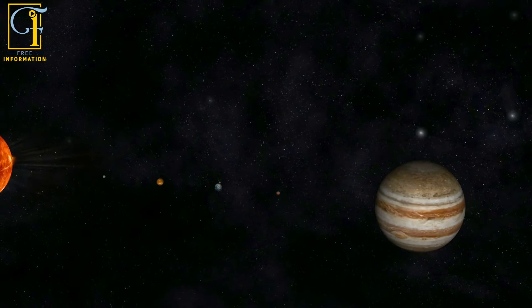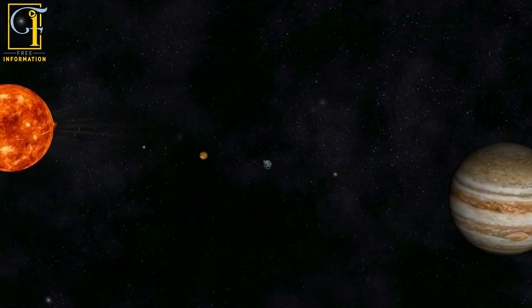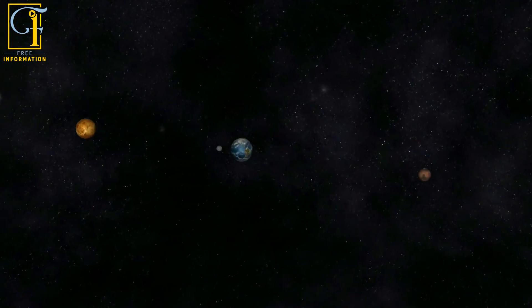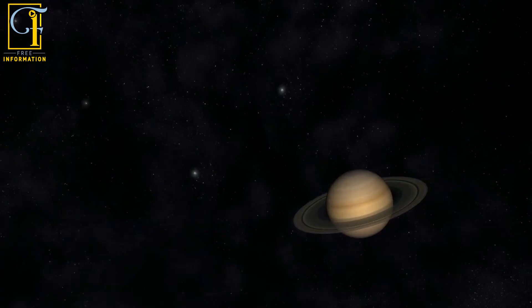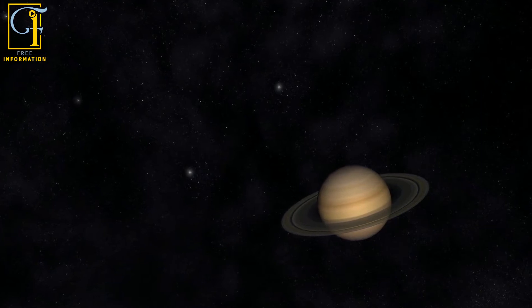A person cannot stand on the surface of the planet because the surface does not have properties like the surface of Earth. 96% of the planet's mass is hydrogen gas. Theoretically, the planet has a solid core, but no one knows how big it is.